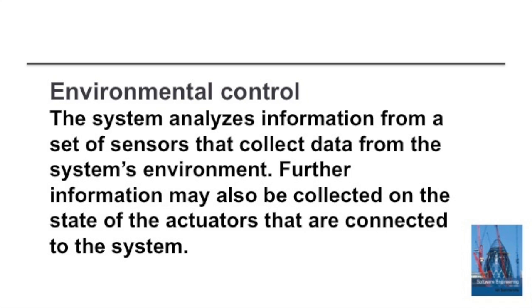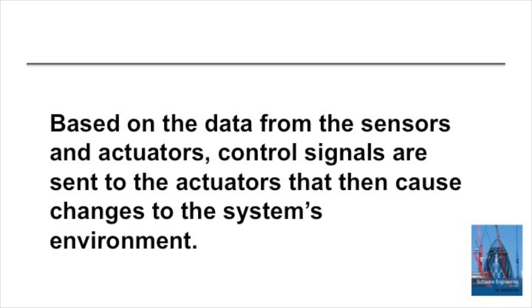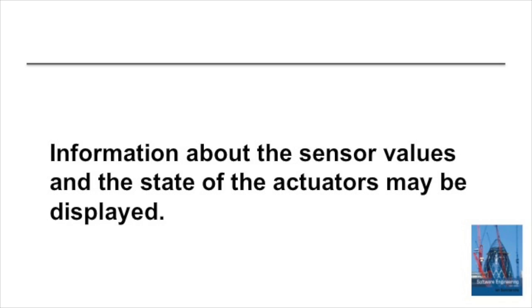Environmental control architectures collect information from a set of sensors, check the state of actuators in the system, carry out analysis based on the data collected from sensors and actuators, and then send control signals to the actuators to change the state of the system — so that the actuators are continually changing in response to signals from the system's sensors. There may also be a display process which shows an operator or user what's going on.